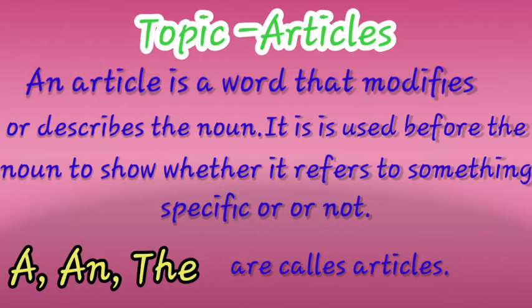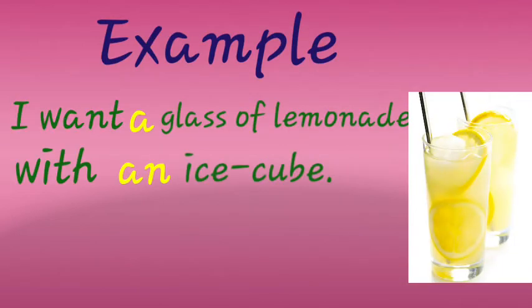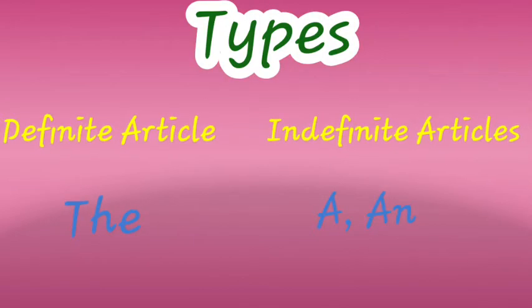For example: 'I want a glass of lemonade with an ice cube.' Here you can see both 'a' and 'an' are articles. 'Glass of lemonade' is a noun, and 'ice cube' is also a noun, so we use 'a' or 'an' to describe the noun. There are two types of articles: definite article and indefinite article. 'The' is the definite article, and 'a' or 'an' are indefinite articles.